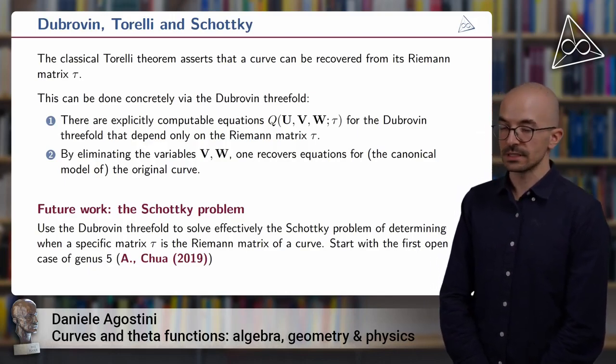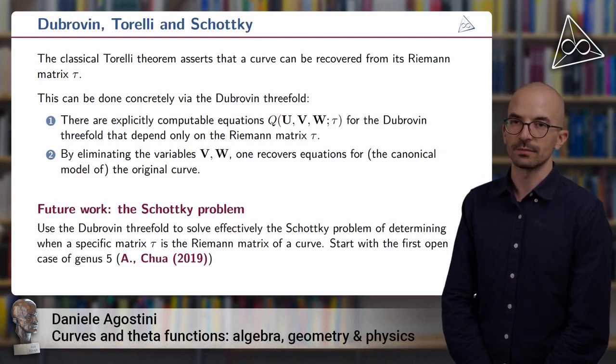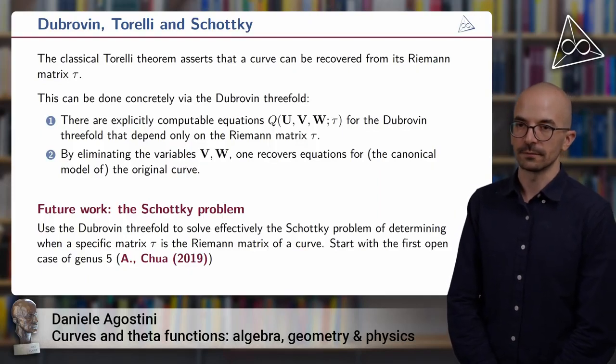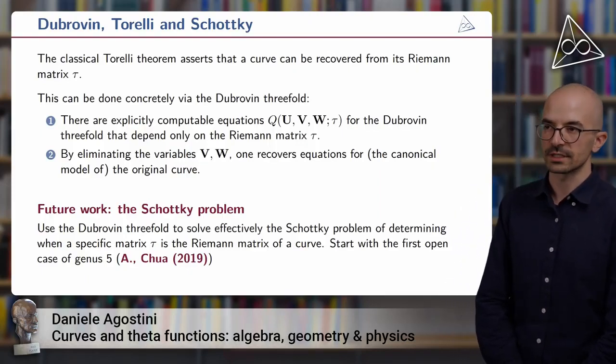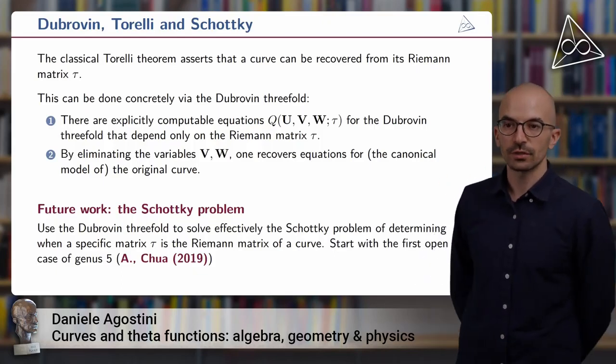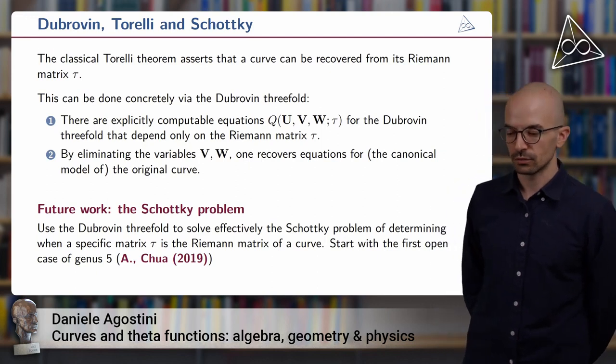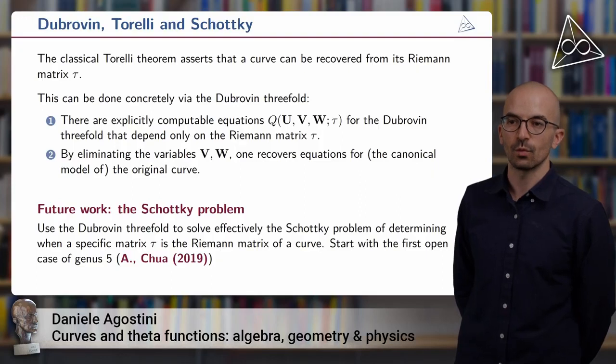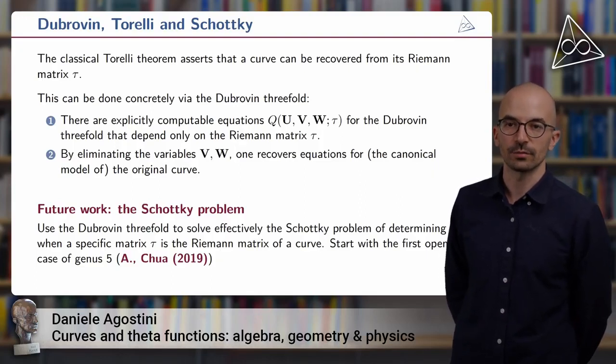So this is a very classical result and it was foundational in algebraic geometry. It has been replicated in higher dimension, for example, for surfaces or hypersurfaces. The point of the Dubrovin threefold is that it gives us an effective way to recover a curve from the Riemann matrix tau.